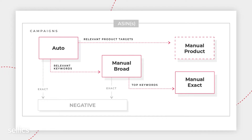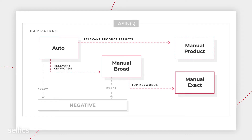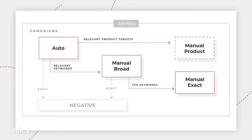Let's now look into a case scenario. I come from a big basketball school, so let's pretend to be a basketball manufacturer. Let's start with the prototype of an ideal campaign structure. We're selling one ASIN of a men's basketball, so I'm going to create two campaigns: an auto campaign and a manual campaign. The manual campaign will contain three different ad groups: a manual broad, a manual exact, and a manual product targeting ad group.